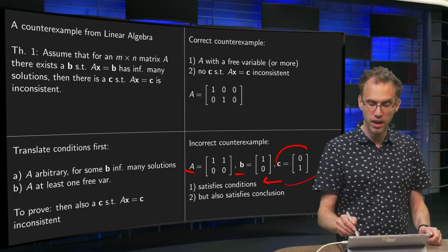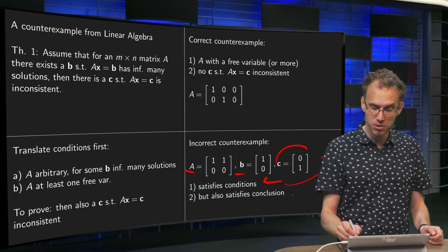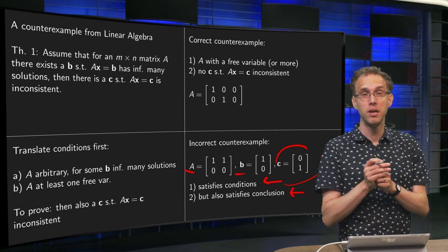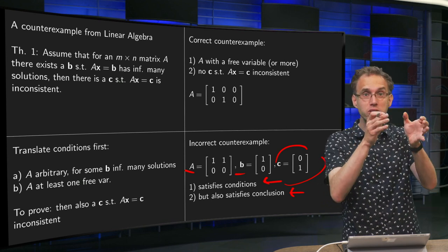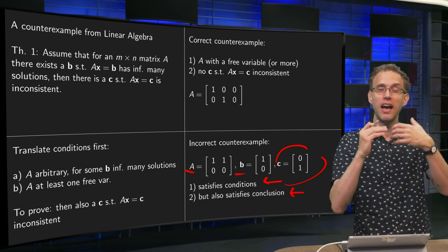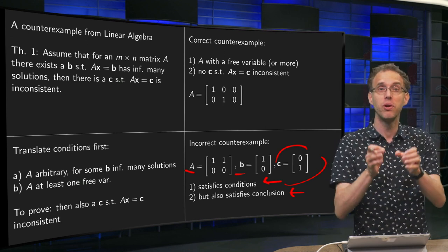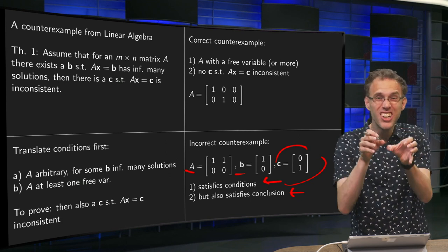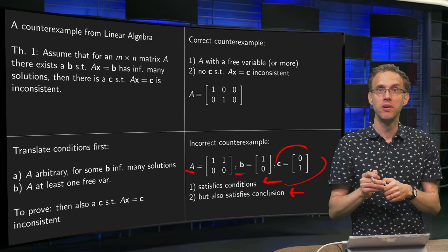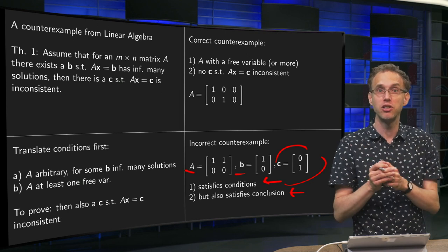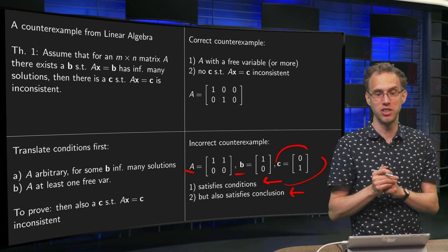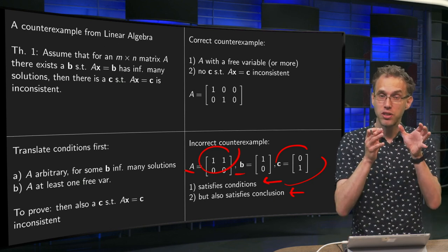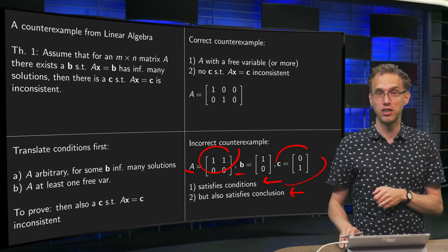And now your Ax = C becomes inconsistent. However, this is not a correct counterexample because you satisfy both the conditions and the conclusion. In order to have a correct counterexample, you have to satisfy the conditions, but you should not satisfy the conclusion. So you should make an A such that Ax = C can never become inconsistent. So this A won't work. So this is an example of an incorrect counterexample.